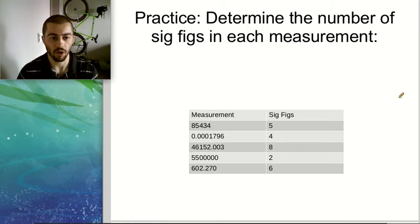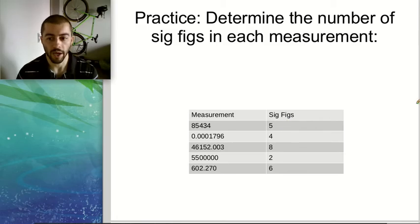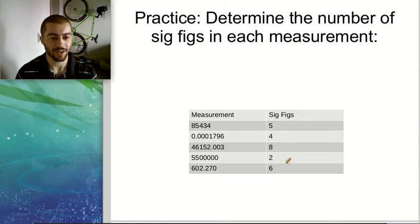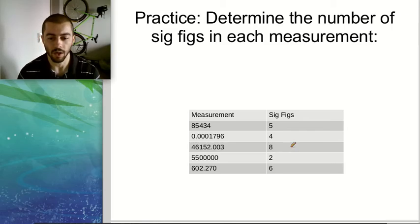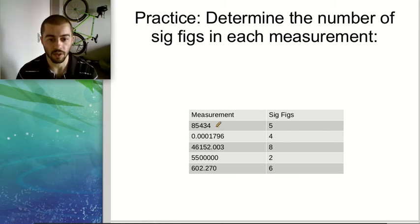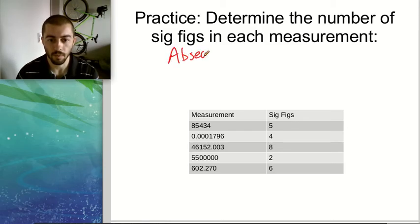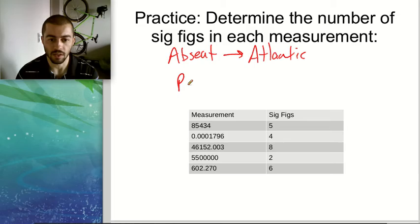If you got them all right, great — you can skip forward to the next slide. I'm going to go through using the America rule how we arrived at each of these answers. If decimal place is absent, we start from the Atlantic; if the decimal place is present, we start from the Pacific. The Pacific is on the west coast, so we come in from the left. The Atlantic is on the east coast, so we come in from the right.